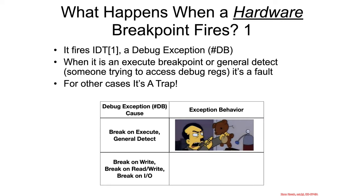So let's talk about what happens when a hardware breakpoint fires. It actually fires IDT entry 1, which the manual calls a debug exception. So you can see that one, this is from hardware, and two, it's called an exception — so this notion of hardware interrupts versus exceptions are not mutually exclusive.